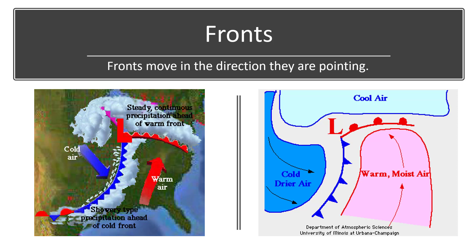A steady continuous precipitation will be north of the warm front. In the warm season, thunderstorms can develop north of and along warm fronts. Dense cold air behind the cold front will force the warm air to rise along and ahead of the cold front. A showery type of precipitation is expected along and ahead of the cold front, and thunderstorms are common with the cold front during the warm season.